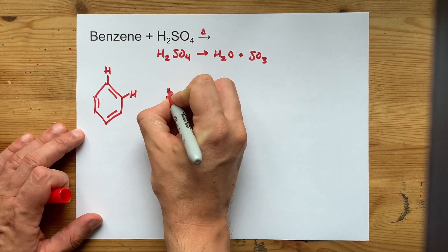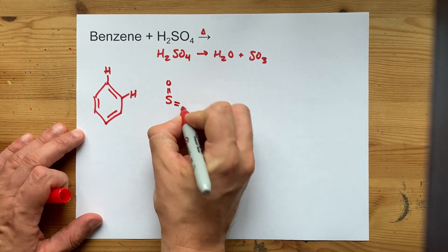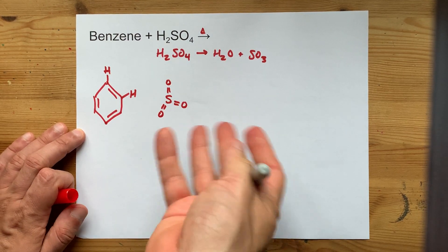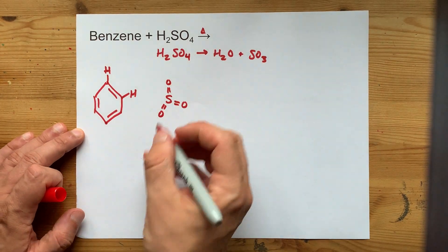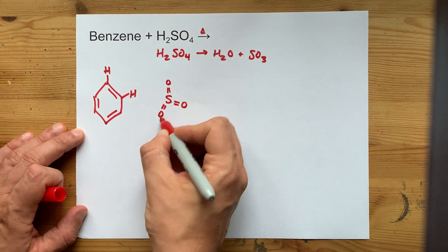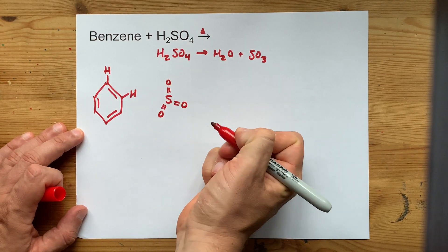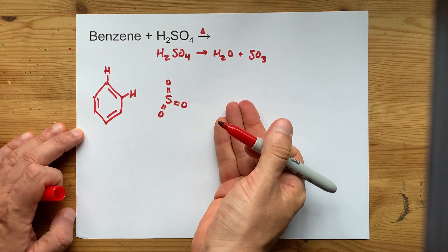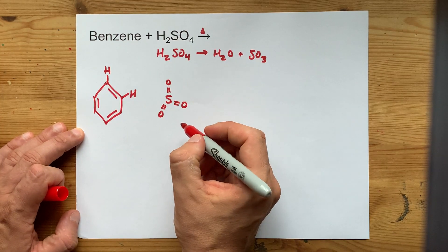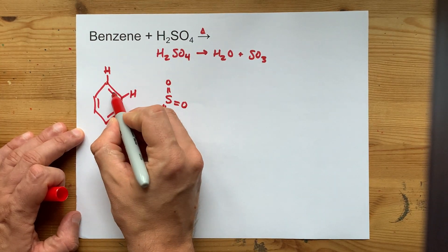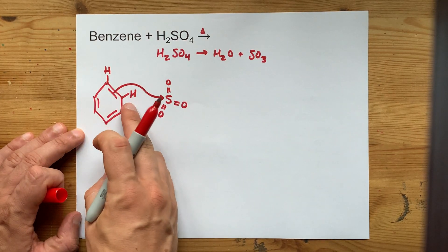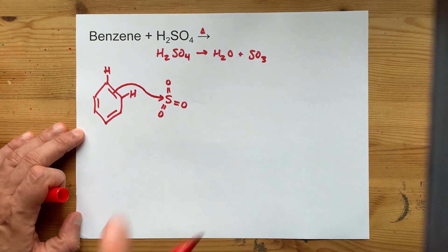Now, SO₃ — the way I draw the Lewis structure for SO₃ is with a sulfur triple bonded to three oxygens. Some teachers will draw that differently. That sulfur, which is connected to three very electronegative atoms, is slightly delta plus — it has a positive formal charge. That is attractive enough that an electron pair from benzene, even though they're delocalized, can attack it.